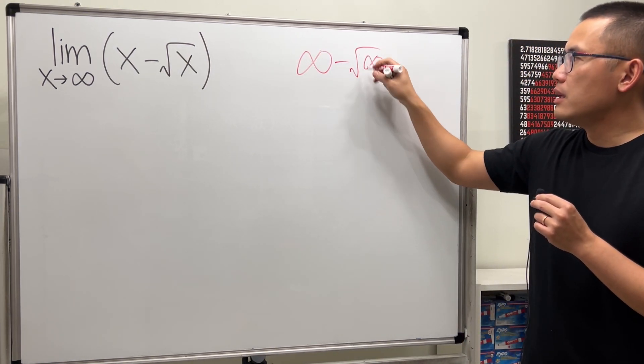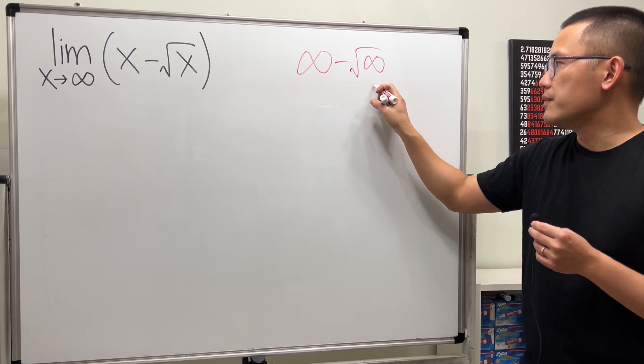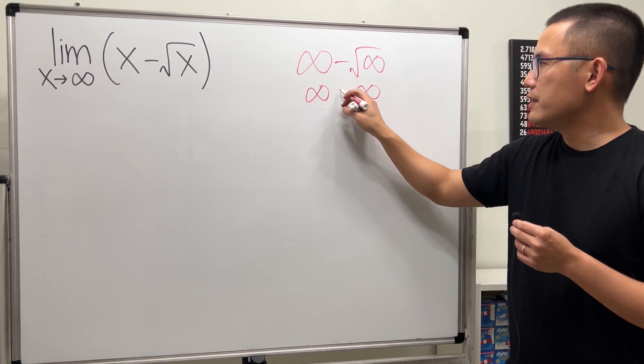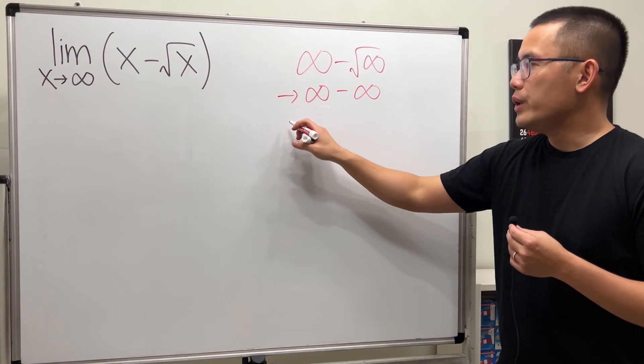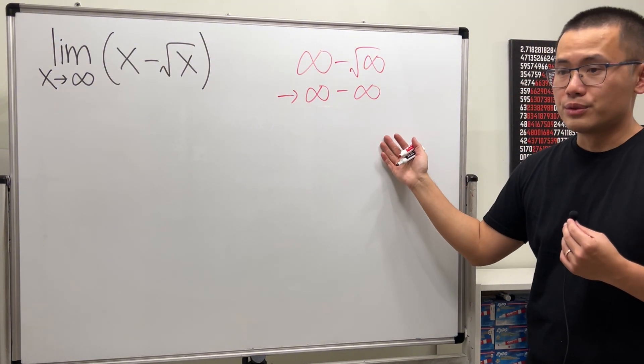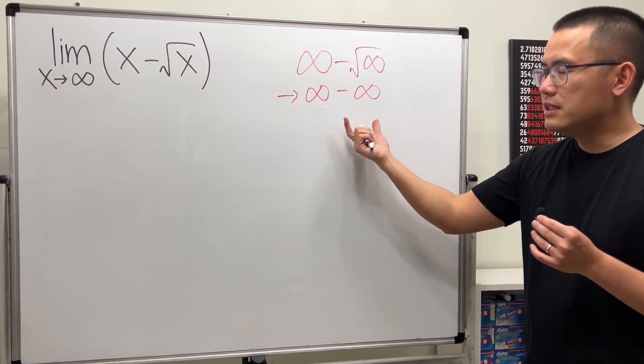Because square root of infinity is infinity, it looks like we have infinity minus infinity. But in the limit situation we cannot say this goes to zero because this is an indeterminate form.